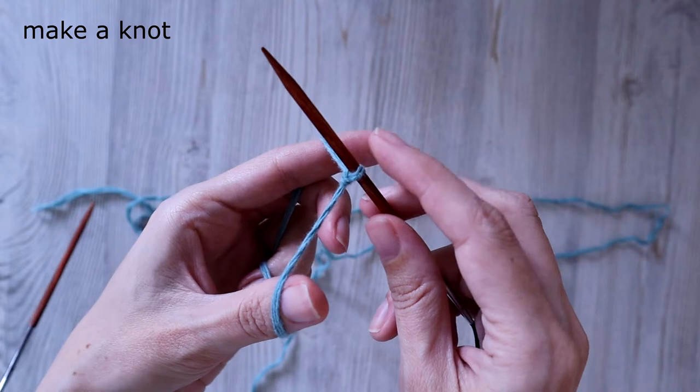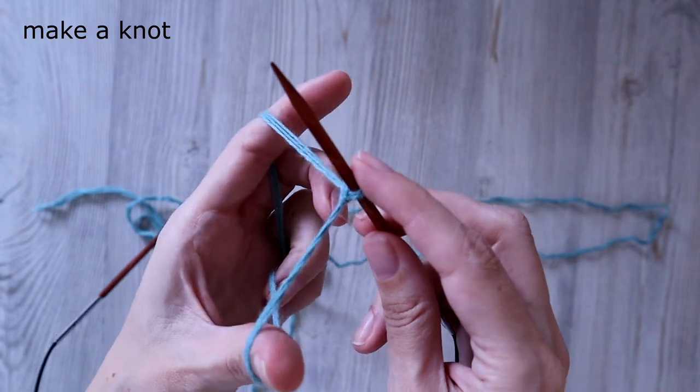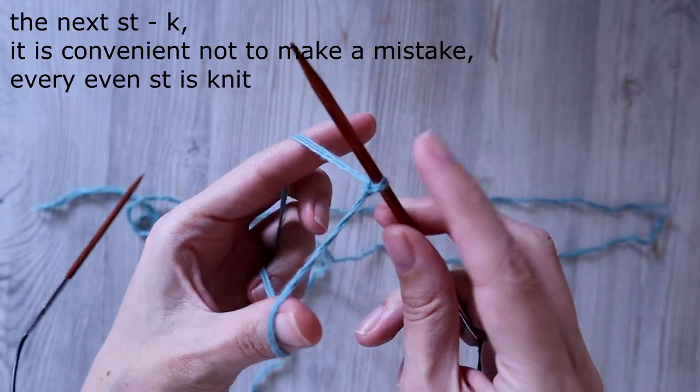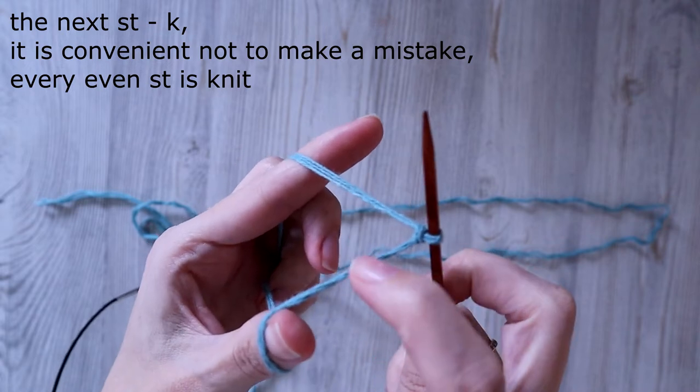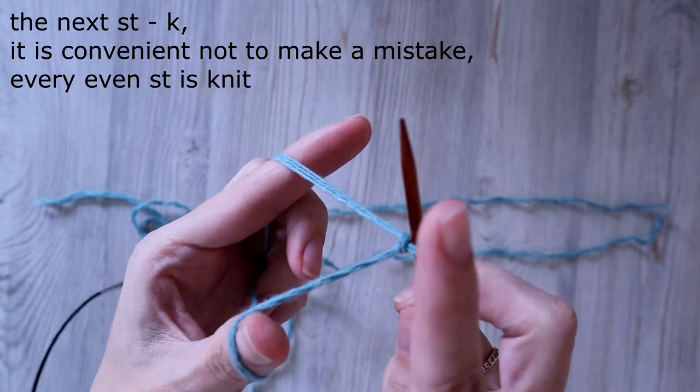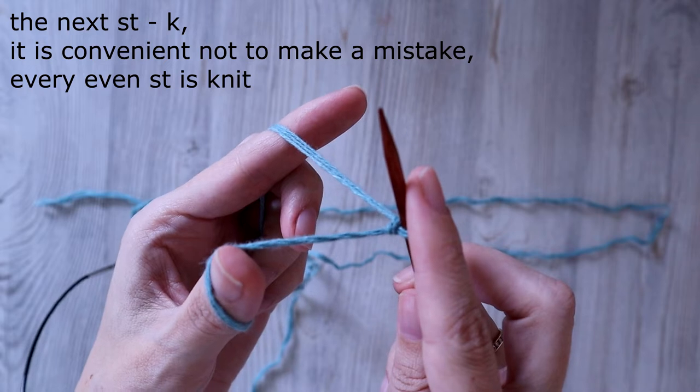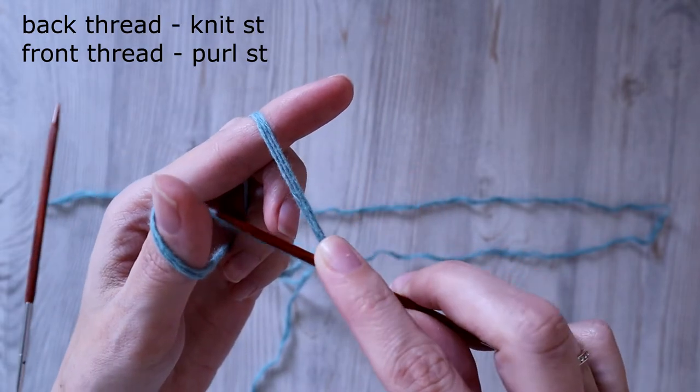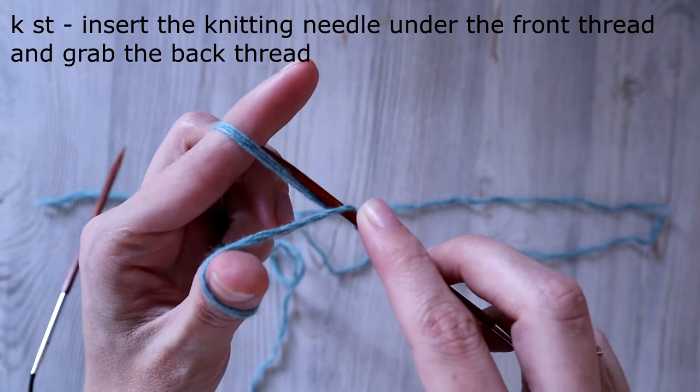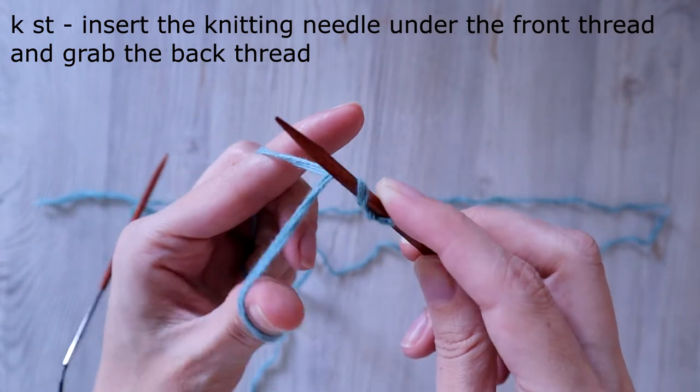Every one stitch is knit stitch. We have the back thread and the front thread. Okay, now I'm going to insert the needle under the front thread and grab the back thread. It's a purl stitch. Okay, we have knit.